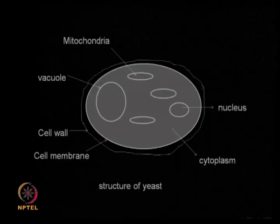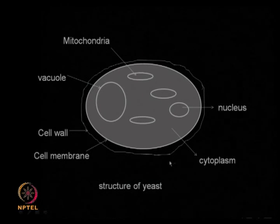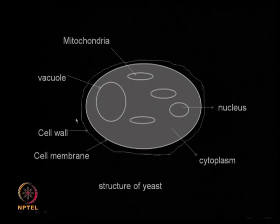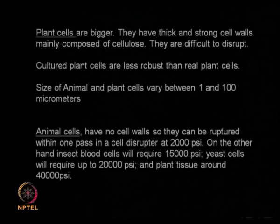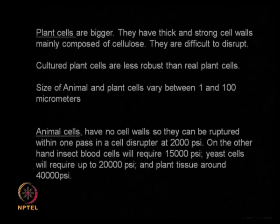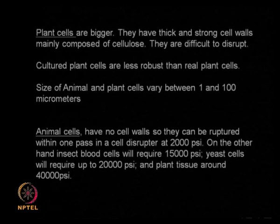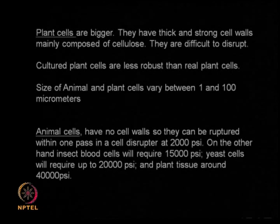Yeast is slightly bigger — 2 to 20 microns, generally spherical or ellipsoidal in shape, and quite tough compared to bacteria. Molds are very big, filamentous, can have very thick walls, and plasma membranes are mainly made up of phospholipids. To break yeast or molds you need much higher shear stresses compared to bacteria. Also, filamentous molds may get entangled in certain mechanical agitators, which is an important point to consider.